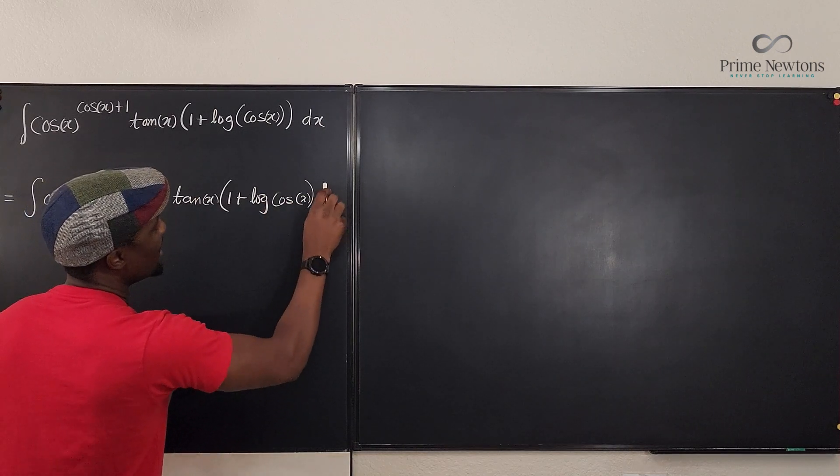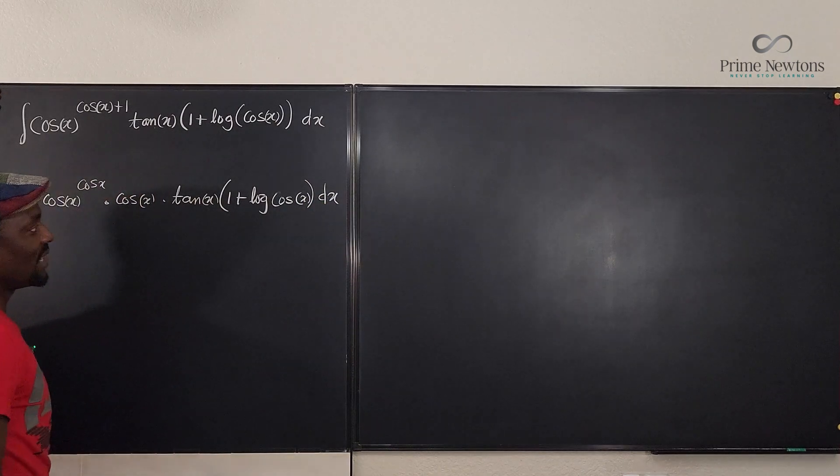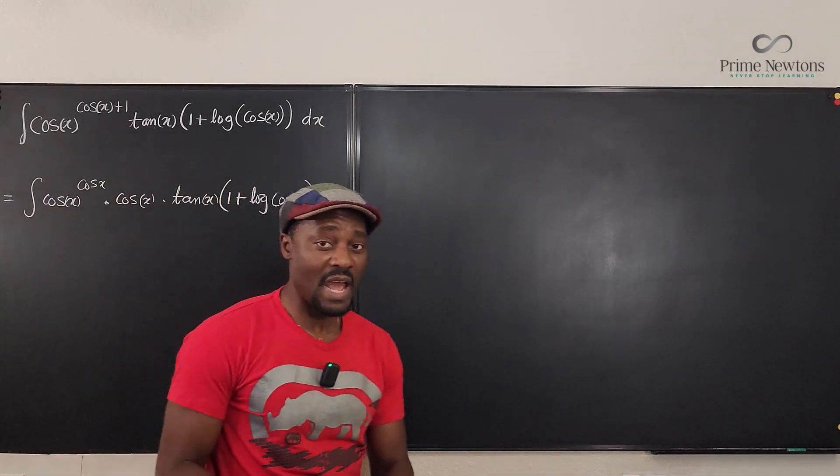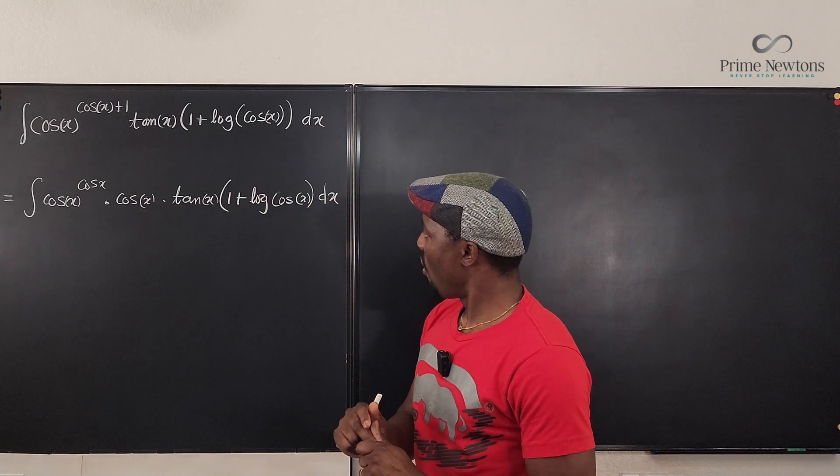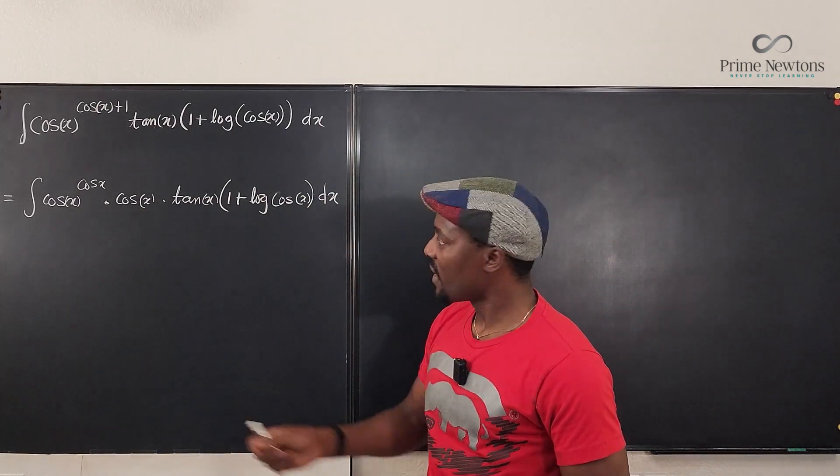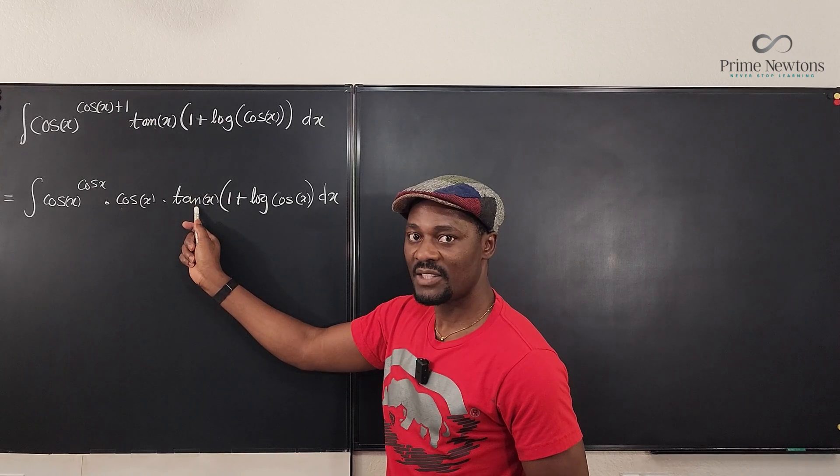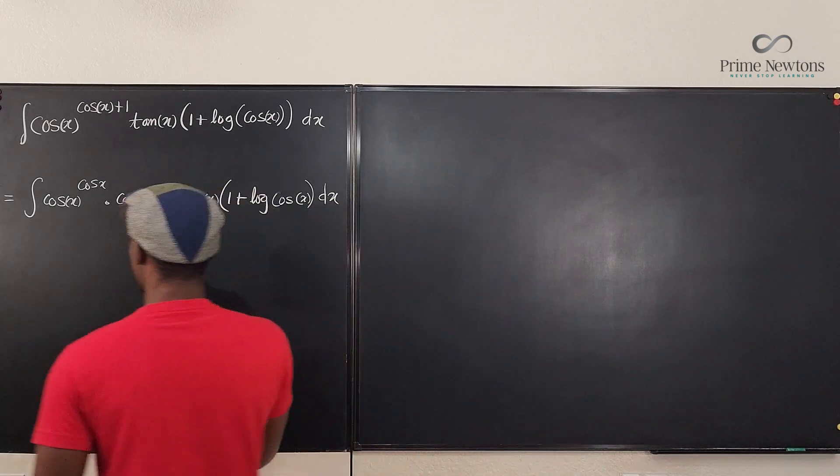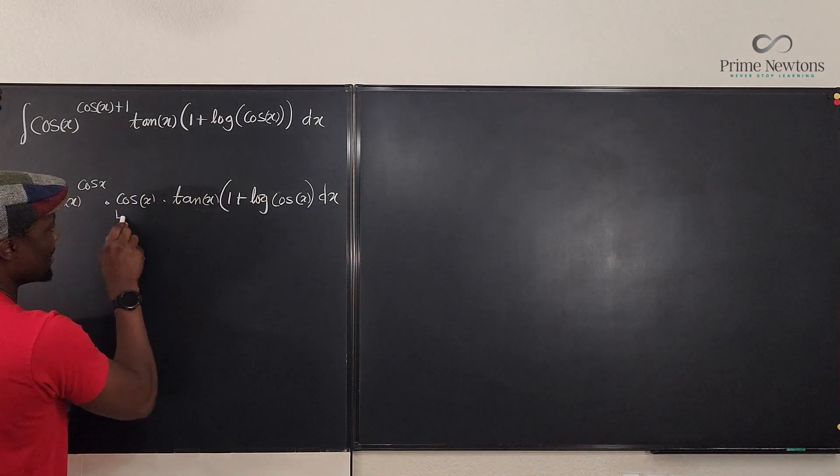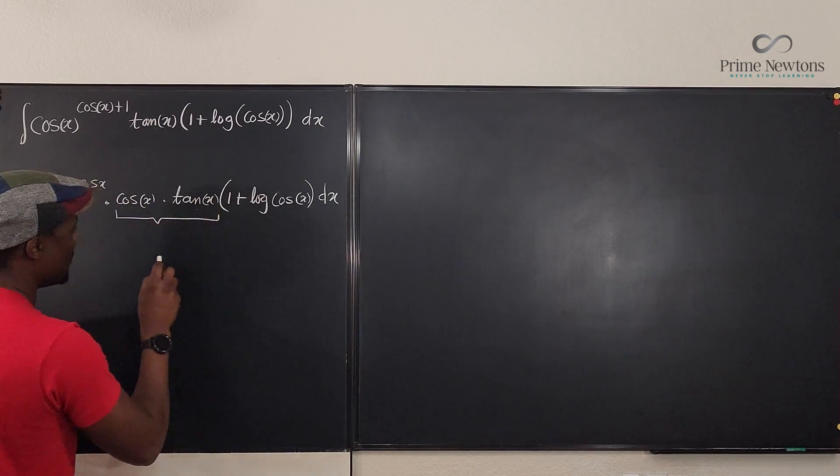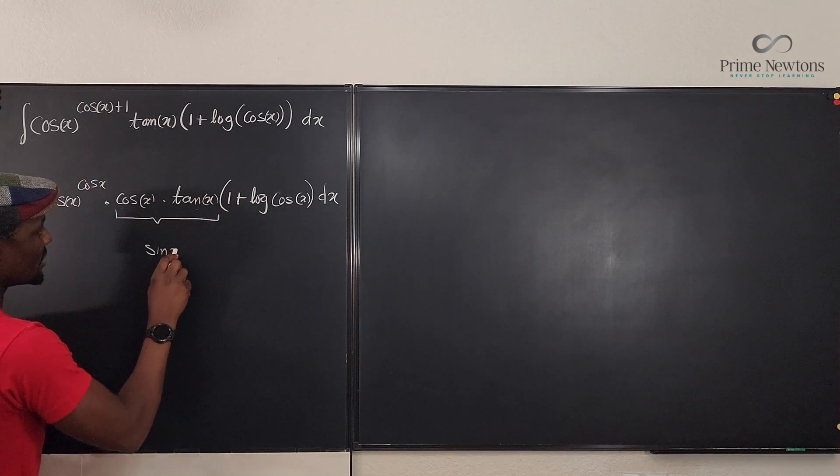Crazy dx, something like that. Now, what do we do with this? I know that cosine x times tan x is going to be sine x. So let's bring this together. This will become sine x. So I have 1 plus the logarithm of cosine x.